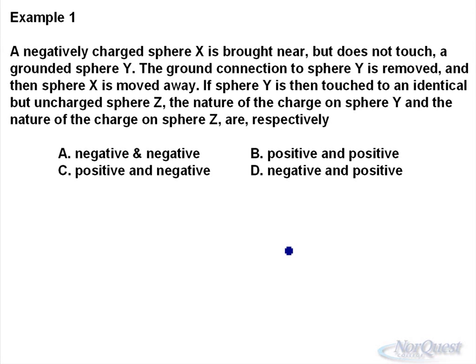Our first example: a negatively charged sphere X is brought near but does not touch a grounded sphere Y. The ground connection to sphere Y is removed, then sphere X is moved away. If sphere Y is then touched to an identical but uncharged sphere Z, the nature of the charge on sphere Y and the nature of the charge on sphere Z are, respectively.